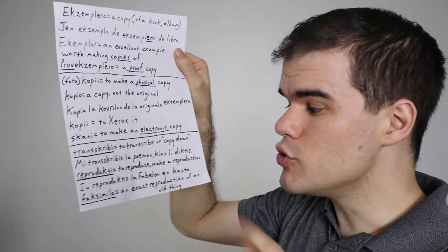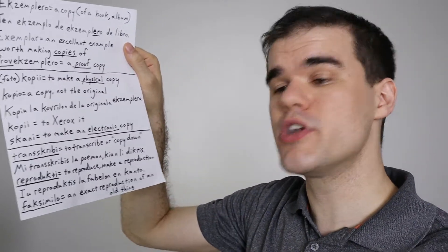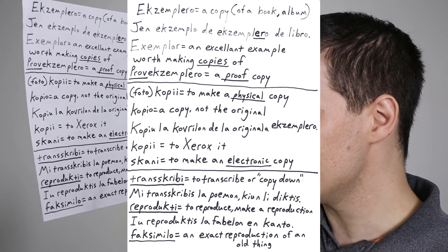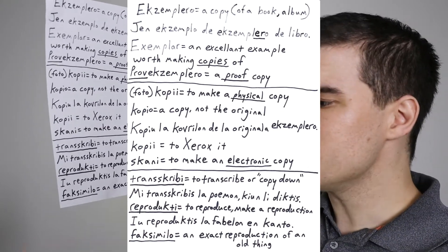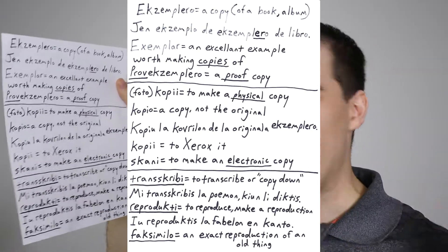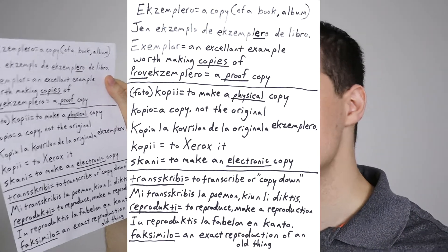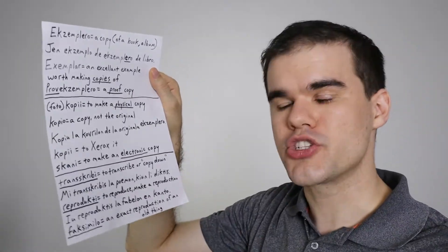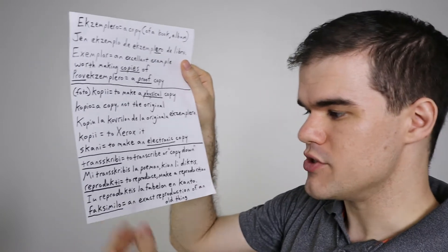Maybe if you're a curator of a museum, you might use these more. Reproducti is to reproduce or to make a reproduction of something. Iu reproductis la fabellum en canto. Somebody reproduced the fable in a song. They heard this story passed down orally from generation to generation and wrote a country song that encapsulated the story there. So that was a reproduction of the original ancient story that was used.